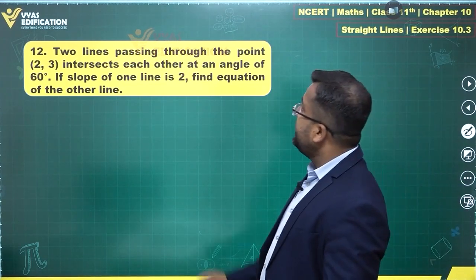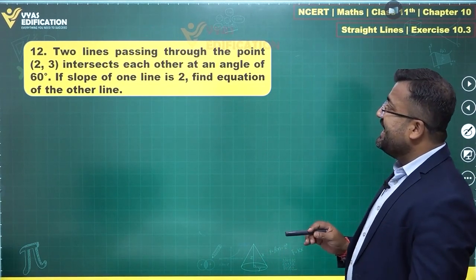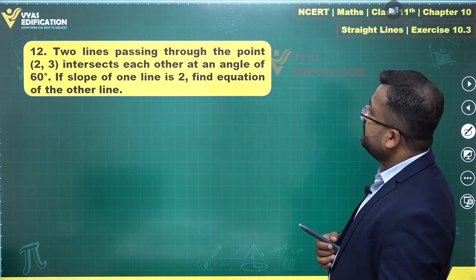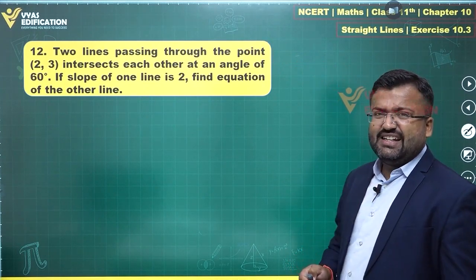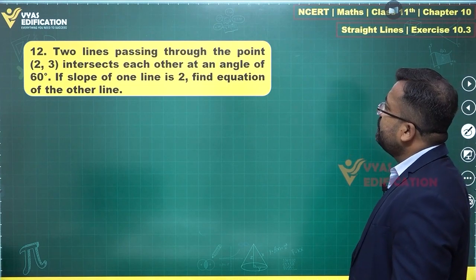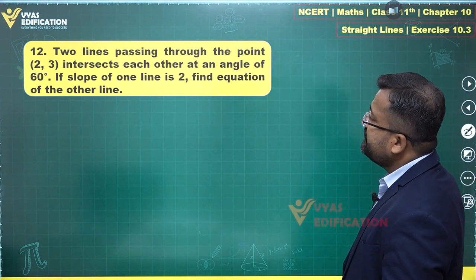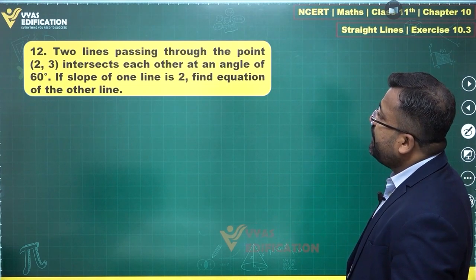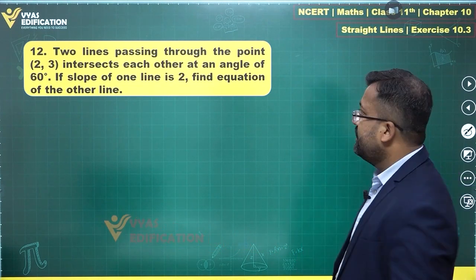Question 12: Two lines passing through the point (2, 3) intersect each other at an angle of 60 degrees. If the slope of one line is 2, find the equation of the other line.